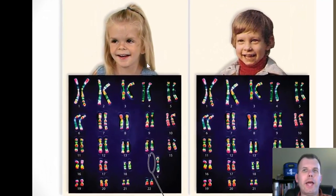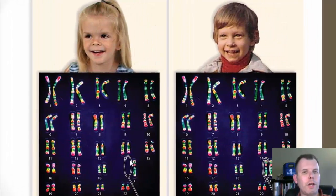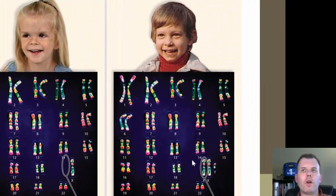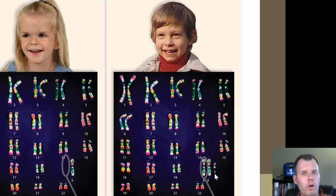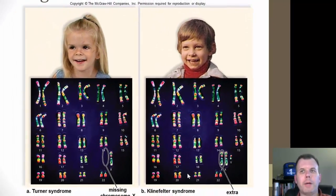Looking at an individual with Turner syndrome — they're missing the other X, they're female because they don't have the Y and only have the X, so this would be a monosomy of the X. In the case of Klinefelter's, they have too many Xs, so this is actually a trisomy because there are three sex chromosomes — two Xs and a Y. Because they have the Y, these individuals are always male. These are interesting examples that can occur in the sex chromosomes, which is the 23rd pair — the X and the Y.